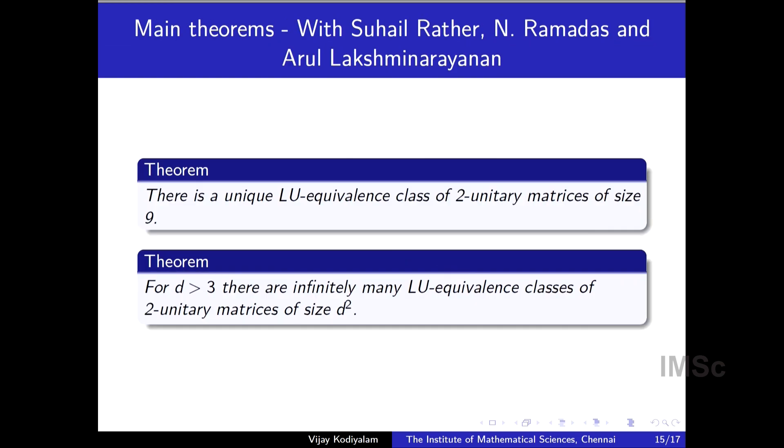Together with Suhail Radha and Ramadas and Arul Lakshminarayanan, we recently managed to prove the following two theorems. The first, which is a bit surprising is, there is a unique LU equivalence class of two unitary matrices of size 9. And I gave you one example, that permutation matrix, that is the only one up to LU equivalence. And that uses a little bit of algebraic geometry to prove. And the other theorem, that doesn't use any picture invariants. This other result, for D bigger than 3, there are infinitely many LU equivalence classes of two unitary matrices of size D square. This falls into two cases, one where it is 6 and one where it is not 6. Each requires a slightly different proof. The one where it is not 6 is much easier because we know that there exist orthogonal Latin squares of anything other than 2 and 6.